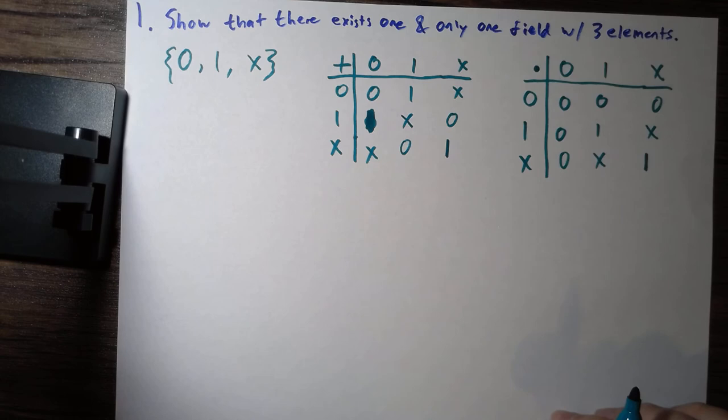And we'll notice that this is the same as Z mod 3. So we can think of these as like the integers modulo 3. And so this is the only field with three elements. Thanks for watching.